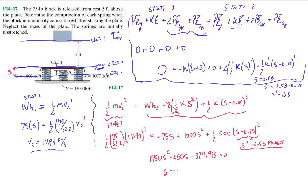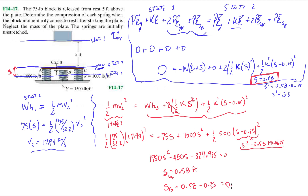Solving the quadratic equation gives a positive s and a negative s. Taking the positive root, s equals 0.58 feet — the same answer the book gets. Springs A and C are each compressed 0.58 feet, and spring B is compressed 0.58 minus 0.25, which equals 0.33 feet.